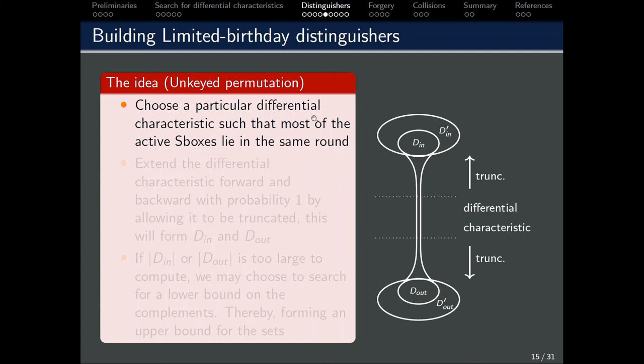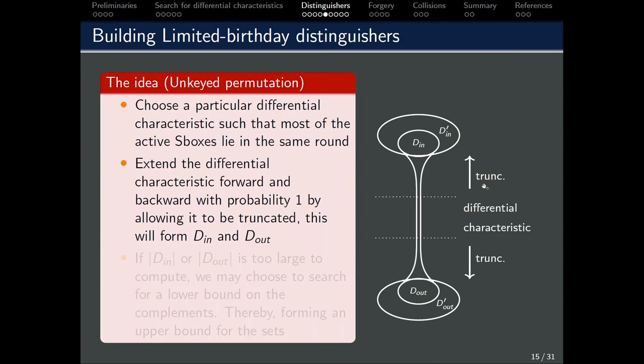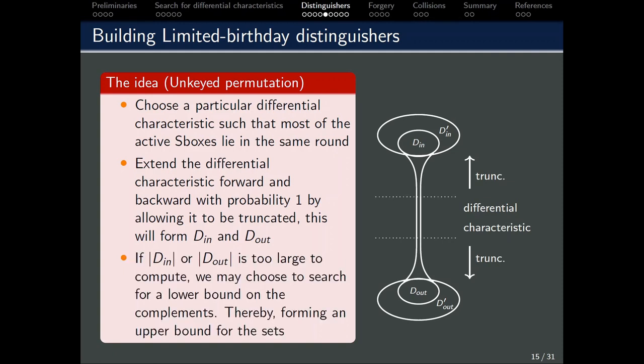Now, we will try to build a limited birthday distinguisher for the ASCON permutation. First, we choose a differential characteristic. We pick one differential characteristic that has the most number of active S-boxes lie in the same round. This is so that we can maximize our degree of freedom to fix most of these active S-boxes, so that we can actually reduce the cost of these distinguishers. Then, we extend the characteristic forward and backward with probability 1, by allowing it to be truncated to form D-in and D-out, which corresponds to the input and output differences. Note that D-in and D-out are only used for the computation of the complexities, so only their size matters. Therefore, if D-in and D-out are too large or too complex to compute, we can opt to compute a lower bound for the size of their respective complements, forming an upper bound for the size of D-in or D-out.